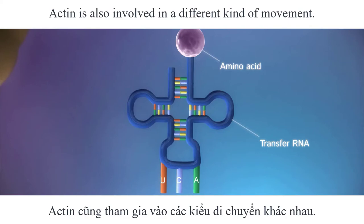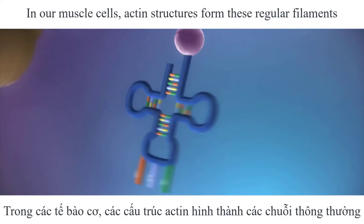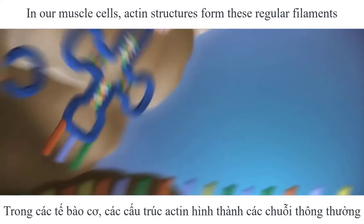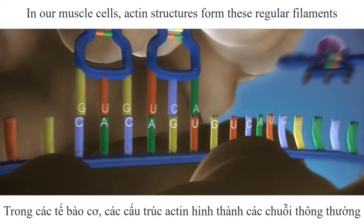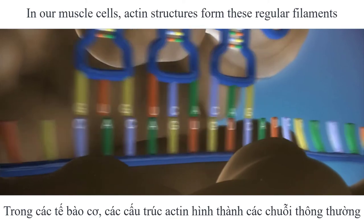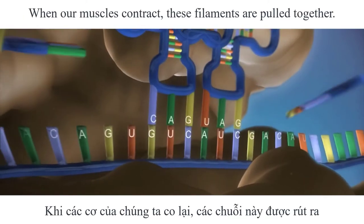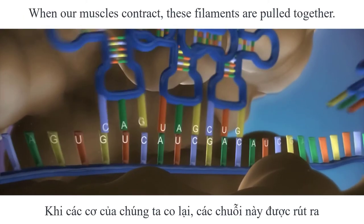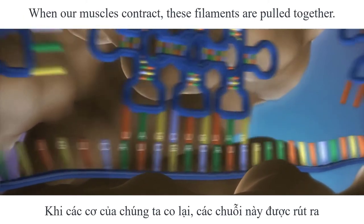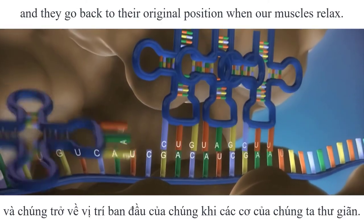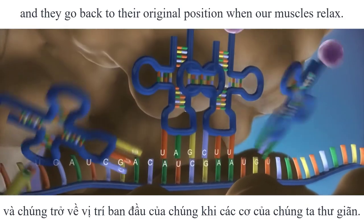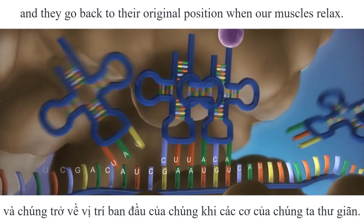Actin is also involved in a different kind of movement. In our muscle cells, actin structures form these regular filaments that look kind of like fabric. When our muscles contract, these filaments are pulled together, and they go back to their original position when our muscles relax.